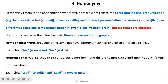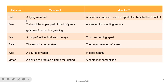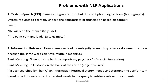Homographs are words that are spelled the same but have different meanings and may have different pronunciation. For example, 'lead' when used for a guide or leader versus 'lead' for the metal. Other examples: 'bat' — a flying mammal or a piece of equipment used in sports; 'bow' — to bend the upper body or a weapon for shooting arrows; 'tear' — a drop of fluid from the eye or to rip something apart; 'bark' — the sound of a dog or the outer covering of a tree; 'match' — a device to produce flame or a competition.